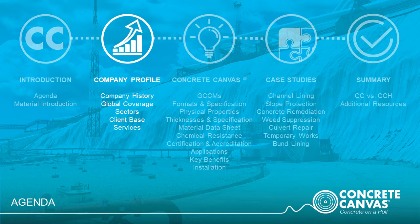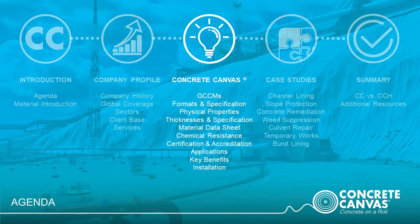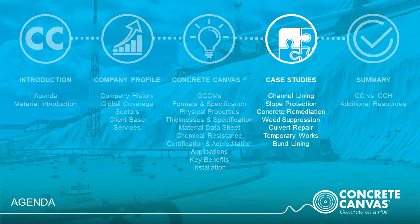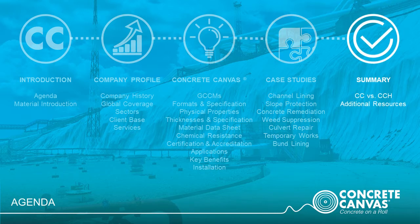Section 2 is a company profile about Concrete Canvas Limited, milestones in the company's growth, the sectors and customers we work with, and the support services that we offer. Section 3 is a more comprehensive introduction to the Concrete Canvas material range, covering physical properties, technical data, applications, key benefits and installation. Section 4 covers a selection of UK and international case studies. The final section is a summary with links to additional resources.